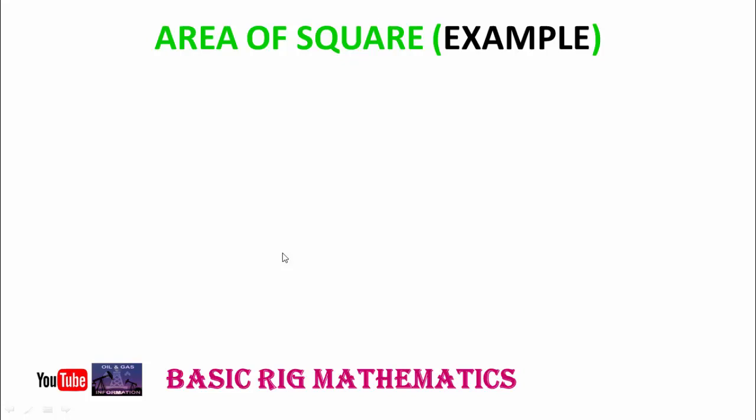Now we take an example. Let's suppose you have a square with four equal lengths, and each length is five meters.